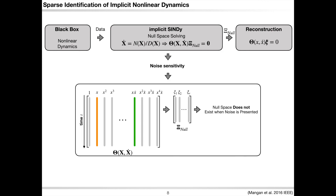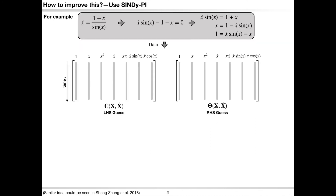However, implicit SINDy also has some limitations. One of the core steps is to solve the null space of the library matrix, which is extremely hard when noise is present, since the library matrix will be full rank and the null space will not exist. When noise is present, an additional step must be taken to truncate the library matrix rank in order to solve the null space, but this process is noise sensitive. To overcome this problem, we developed a new algorithm called SINDy-Pi.